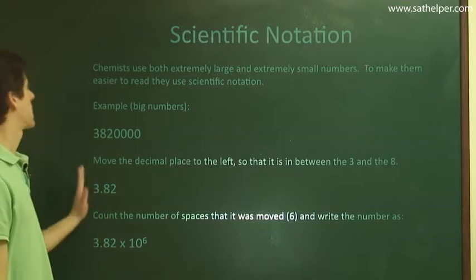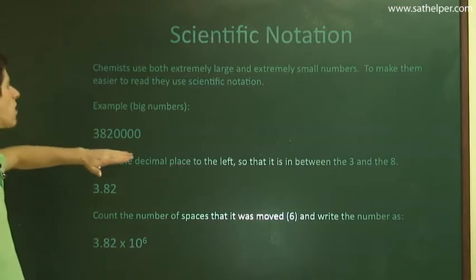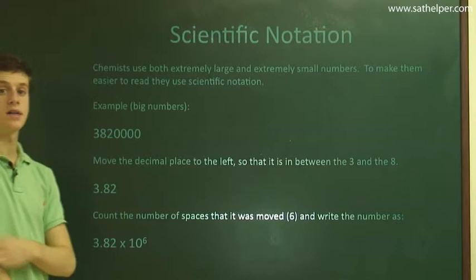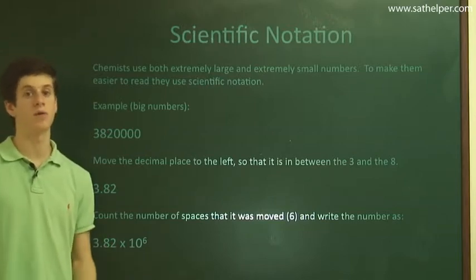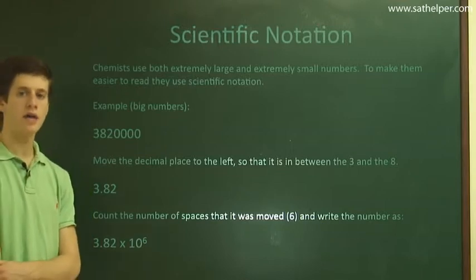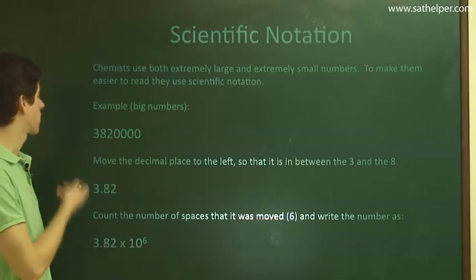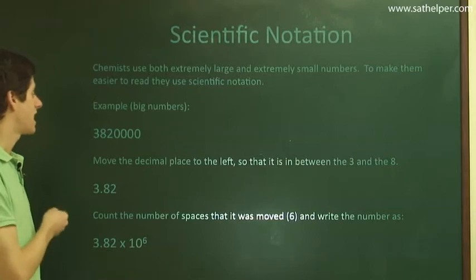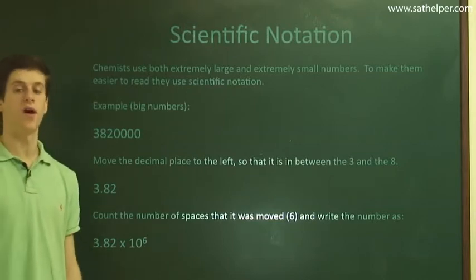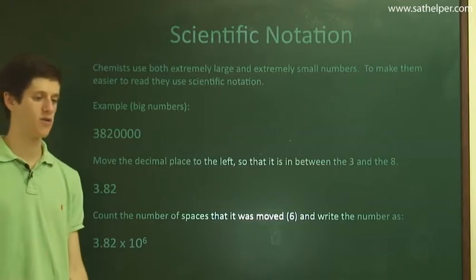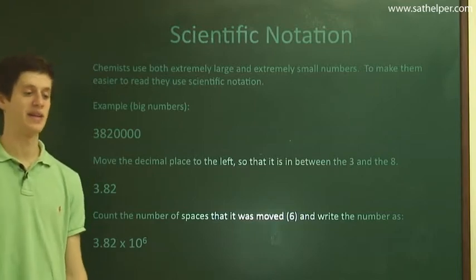So I'm going to do two examples. One is for an extremely large number and the next will be for an extremely small number. But from these two examples, you should be able to write any number in scientific notation. The example that we're going to start off with is 3,820,000. It's not a prohibitively large number, but if you had to write it over and over again, it might get a little annoying.